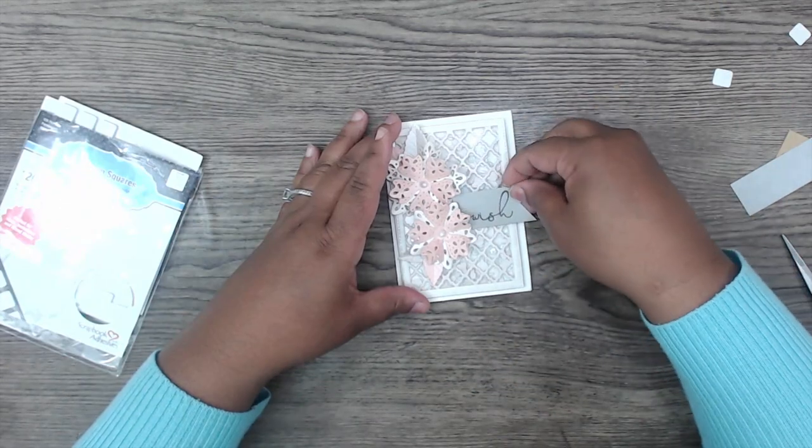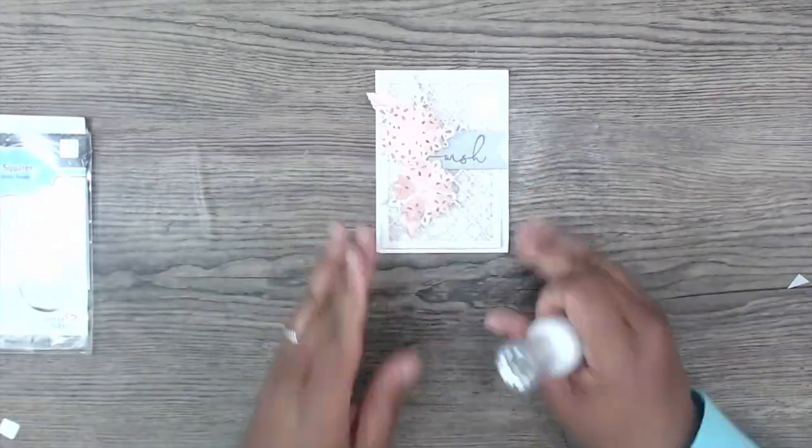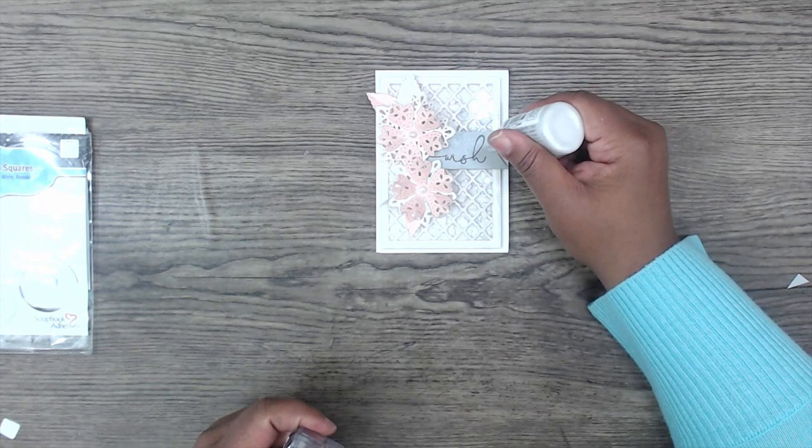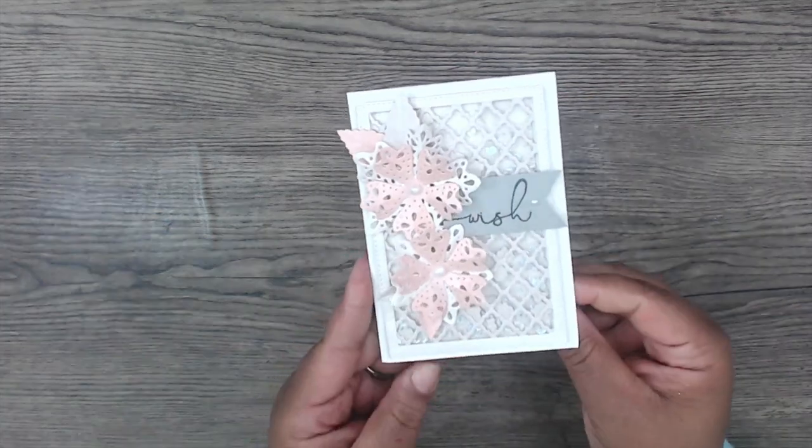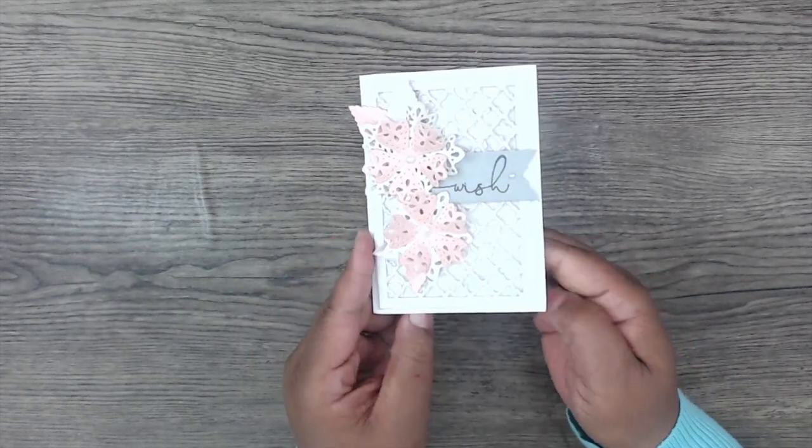So I'm going to tuck that little wish sentiment in between those two flower layers. Again, those have foam dots on the bottom. And I'm going to finish up with the Ivory Seashell Nouveau Drops right on the end there and also in the flower center. And the card is complete. I think it turned out absolutely beautiful.